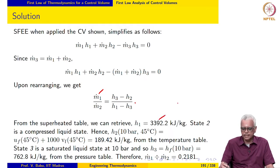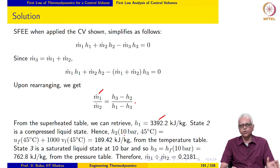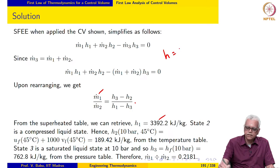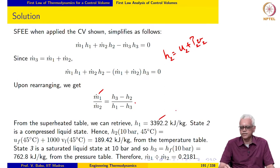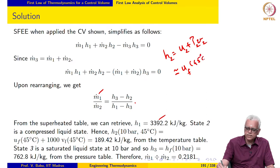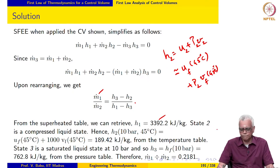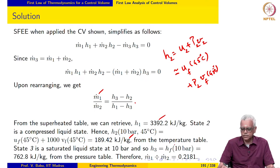H1 is a superheated state, so we retrieve it directly from the property table. H2 is a compressed liquid state, and using the approximation H2 = U2 + P2×V2, we approximate U2 as Uf at 45 degrees Celsius plus P2 times Vf at 45 degrees Celsius, giving H2 = 189.42. H3 is saturated liquid at 10 bar, so H3 = Hf at 10 bar. We then get the required mass flow rate ratio m-dot-1 over m-dot-2 to be 0.2181.